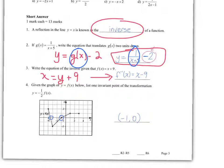Next question here. Given the graph of y equals f of x below, list one invariant point of the transformation y equals negative half f of x. There's actually two possible answers: negative 1, 0 over here, and this other x-intercept that I've circled over here, approximately negative 3.5 comma 0. So there is a second answer.